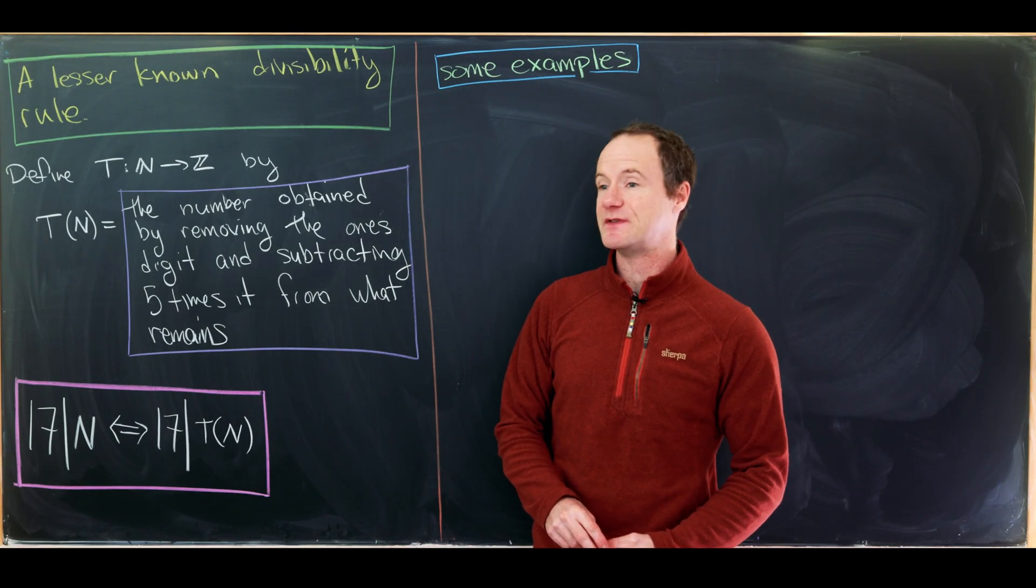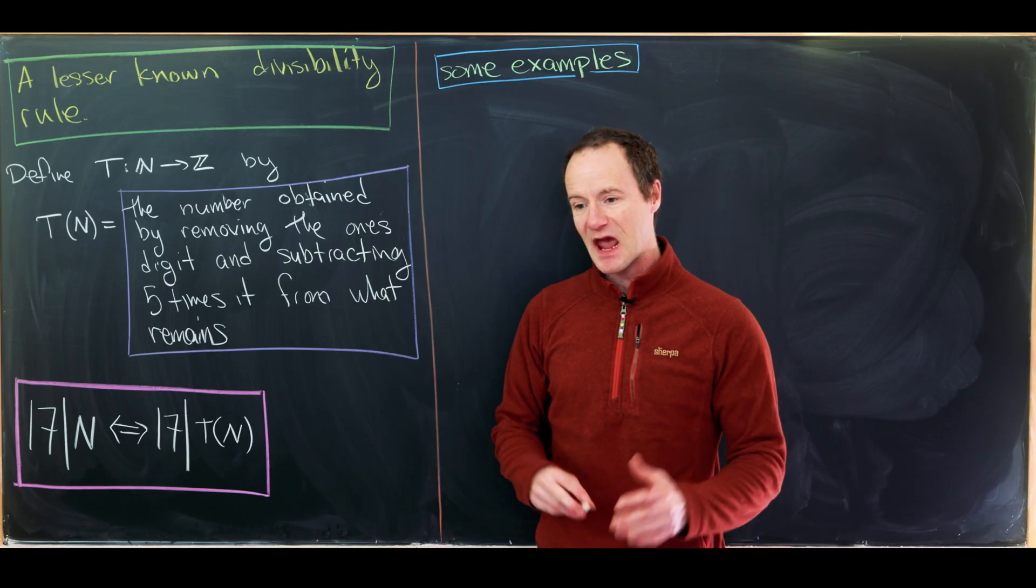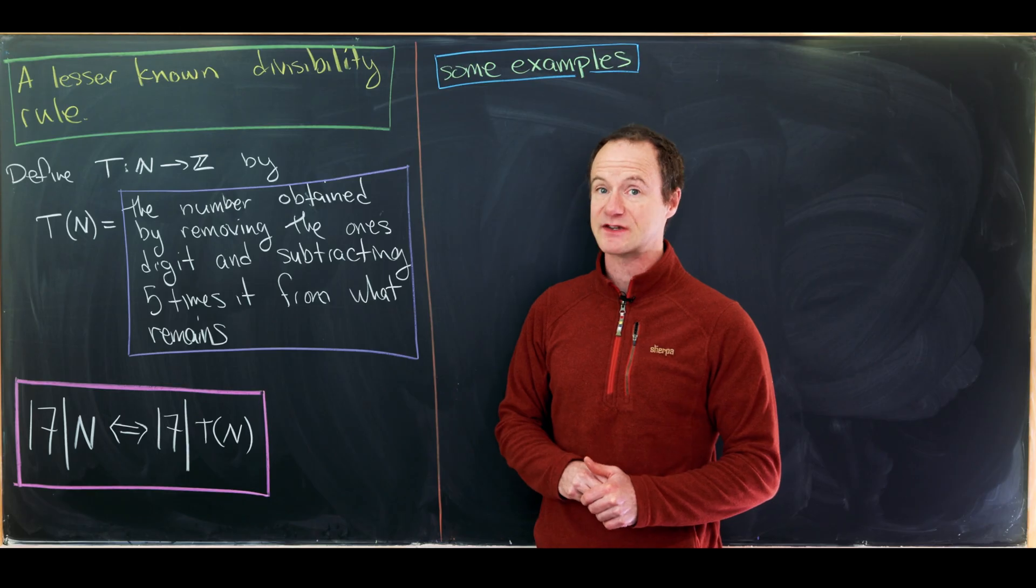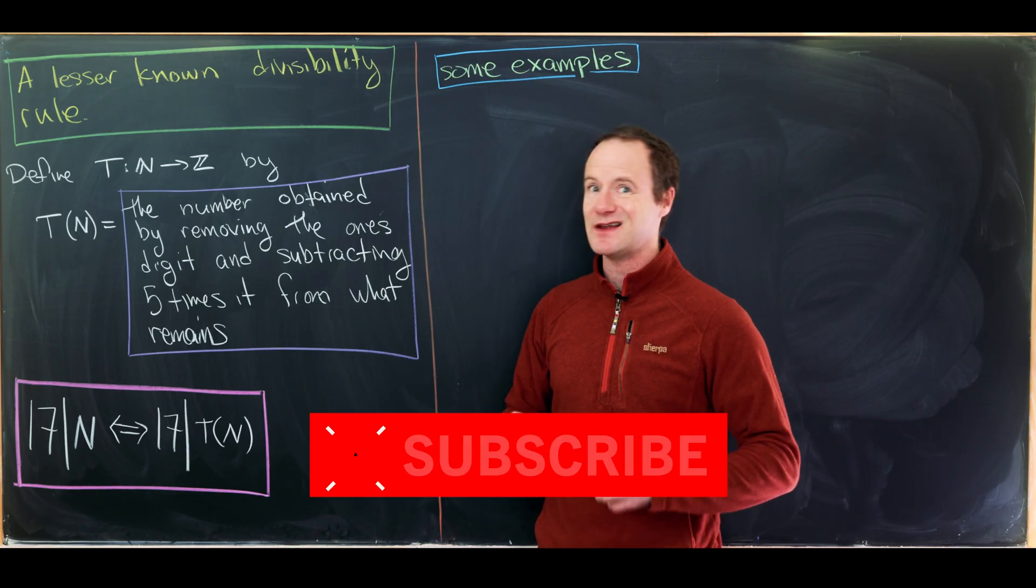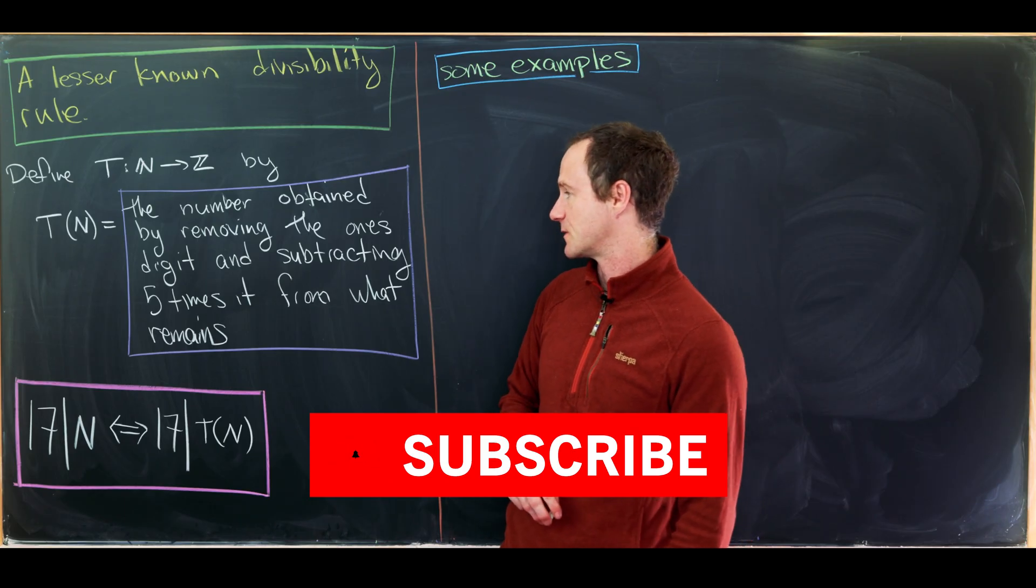Today we're going to look at a lesser-known divisibility rule, divisibility by 17. And in order to appropriately describe this rule, we need a bit of a crazy transformation. So let's define that transformation.